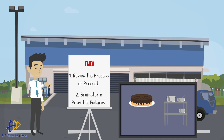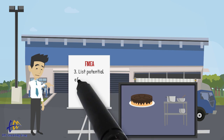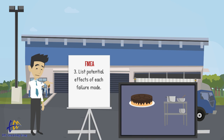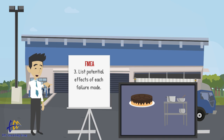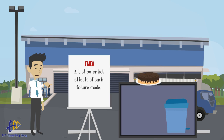Next, for each failure mode, list the potential effects. In other words, if a failure occurs, what problems could it cause? If the cake sticks to the pan when it's done, one possible effect might be that it must be scrapped — it's unusable.